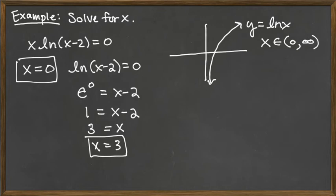But the problem here comes in with x is equal to 0. If we were to put x equals 0 back into this equation, we would have the natural log of 0 minus 2. So that would be the natural log of negative 2, and that's not allowed.